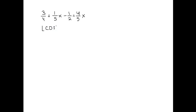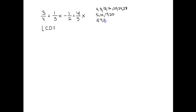I'll determine the least common denominator of all the fractions. The denominators are 4, 5, 2, and 5. Looking at multiples: multiples of 4 are 4, 8, 12, 16, 20…; multiples of 5 are 5, 10, 15, 20…; multiples of 2 include 20 as well. The first number all three denominators share is 20, so the LCD is 20.